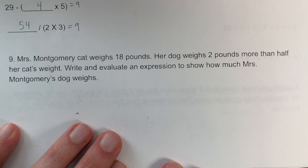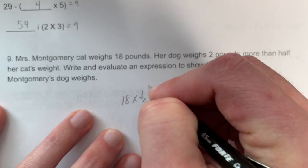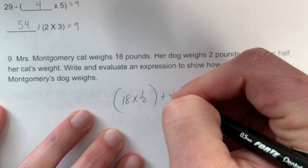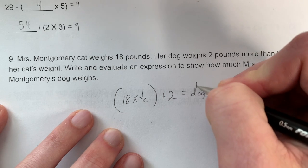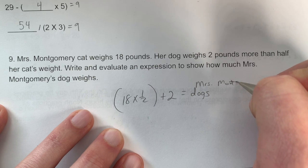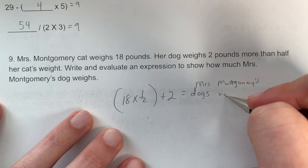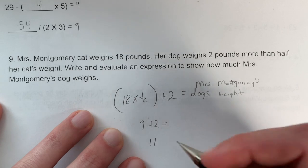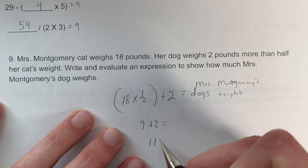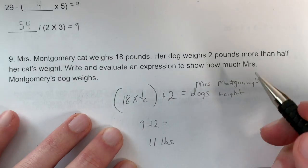Ms. Montgomery's cat weighs 18 pounds. Her dog weighs 2 more than half her cat's weight. First find half the cat's weight: 18 times one-half, then add 2 — so (18 × ½) + 2 equals the dog's weight. Working it out: 18 times one-half is 9, and 9 plus 2 is 11. Ms. Montgomery's dog weighs 11 pounds.